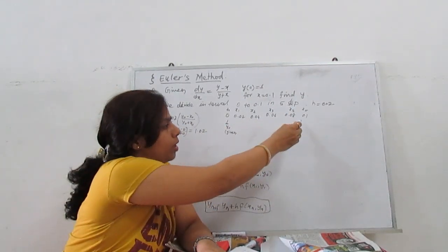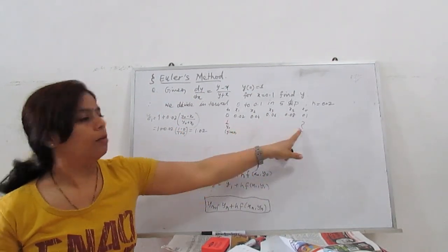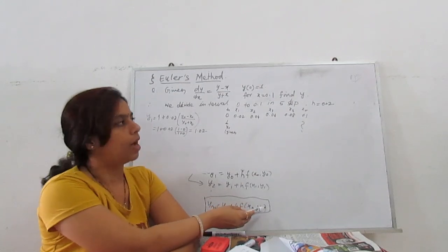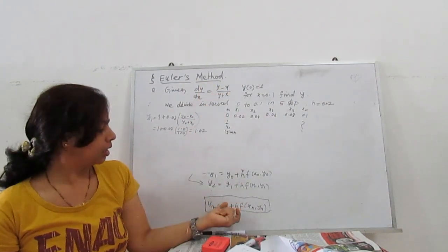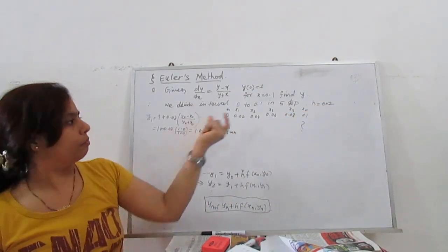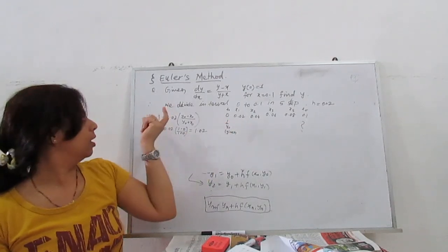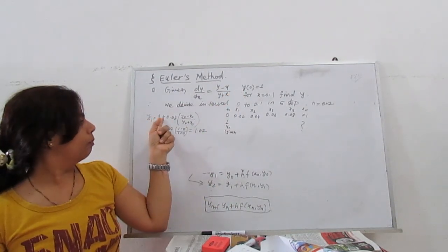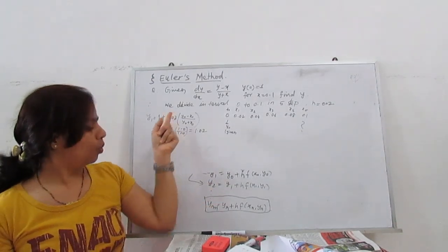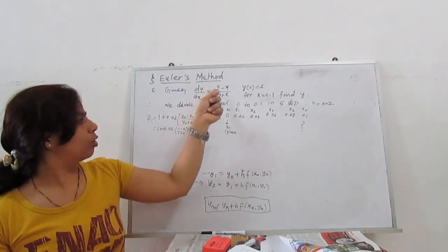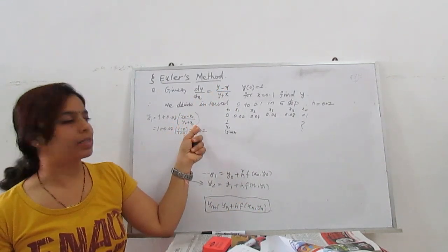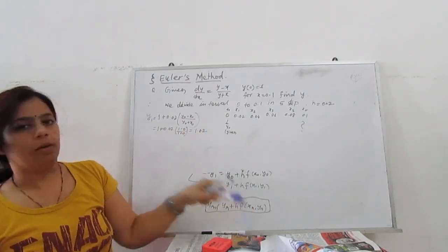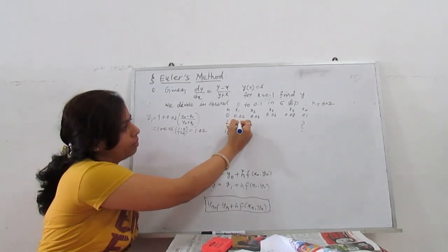Using the Euler formula y(n+1) = yn + h·f(xn, yn), where the function is f(x,y) = (y minus x)/(y plus x) and h = 0.02, we start by calculating y1. Y1 = y0 + h·f(x0, y0). Substituting: y0 = 1, x0 = 0, so f(x0, y0) = (1 minus 0)/(1 plus 0) = 1. Therefore y1 = 1 + 0.02·(1) = 1.02.